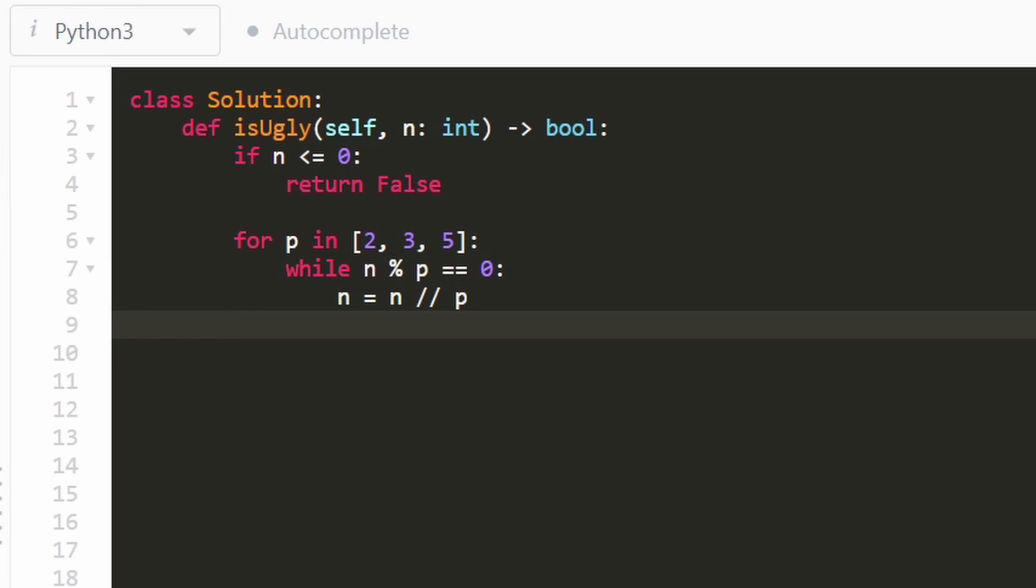And then at the end, we're going to return true if n is equal to 1. If it's not equal to 1, then we're going to return false. We can do that just by returning this conditional, right? We don't have to write it out. We can just return if it's equal to 1, then it's going to be true. If not, it's going to be false. And yeah, that's the entire code. So you didn't have to wait very long.